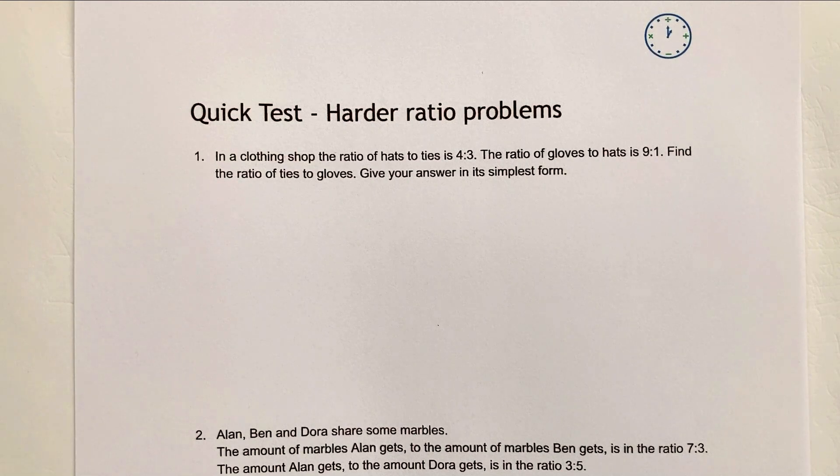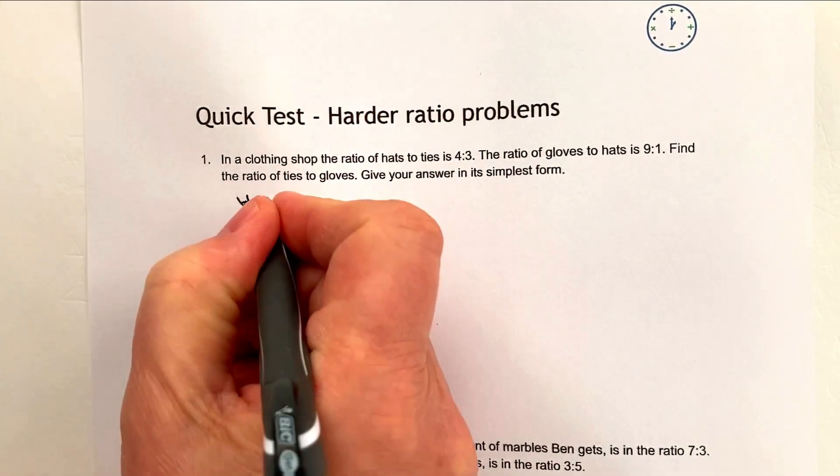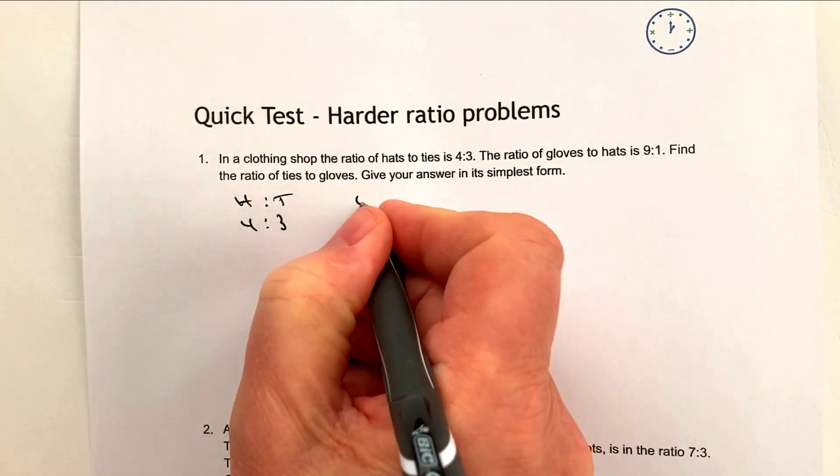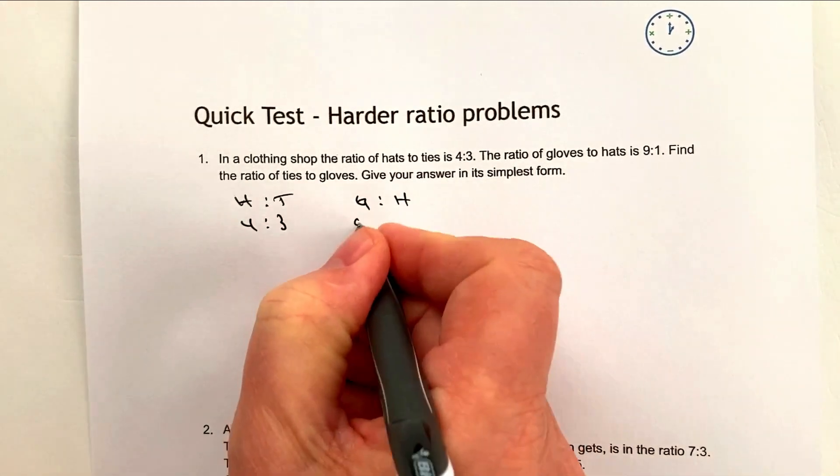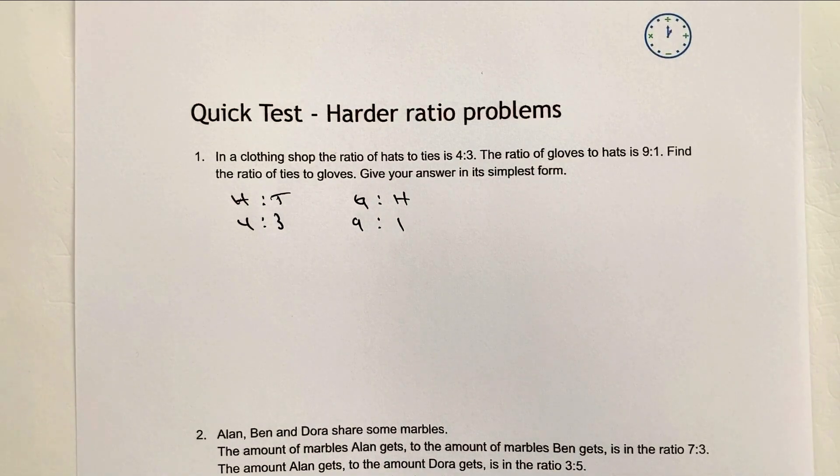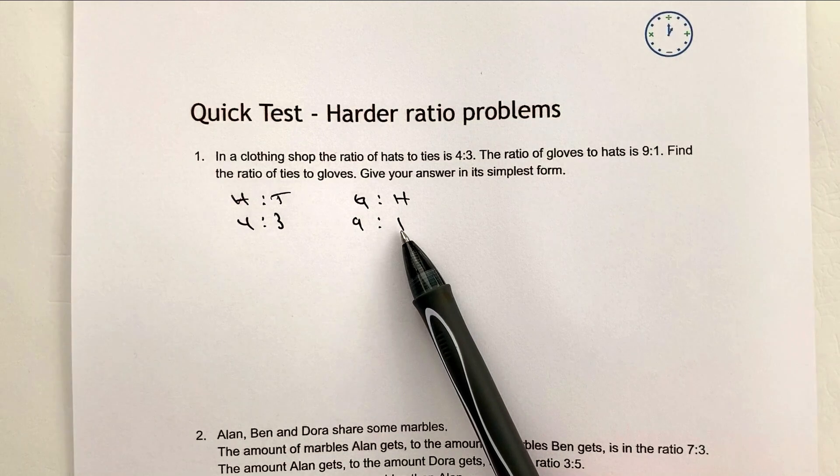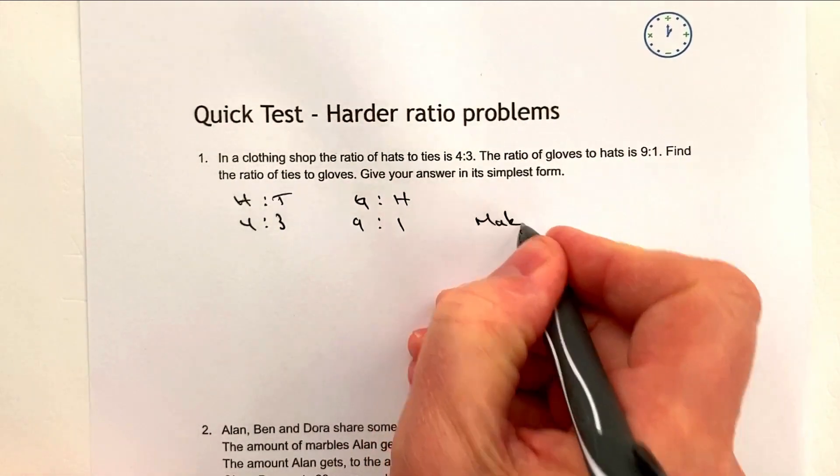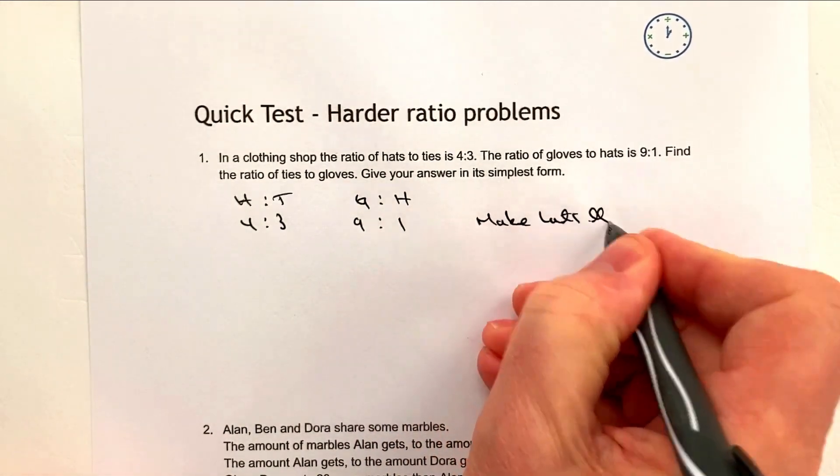I don't know why you would want to find that out, but nevertheless, it's one of those questions that we've got. The difficulty, I think, with these sorts of questions is that they do take a lot of reading through. However, we can break it down. Hats to ties is 4 to 3 and the ratio of gloves to hats is 9 to 1. So the difficulty we've got is that we've got 4 hats here and 1 hat here. So what we need to do is to make the hats the same.